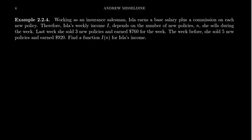So what we know is the following. Say last week, Isla, she sold three new policies and she earned seven hundred and sixty dollars for that week. So that's how much money she made. This actually gives us a data point. So when n was three, the I was seven sixty. We're thinking in the following way: n is our x coordinate now and I is our y coordinate.